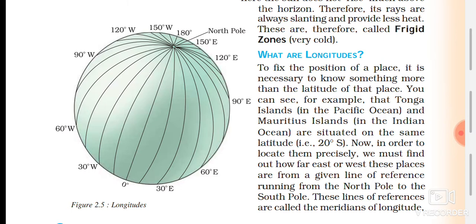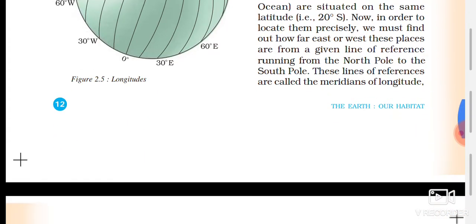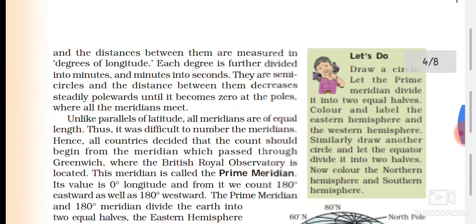Just as the equator is the centre and the southern side goes to south latitudes and the northern side to north latitudes, similarly, if you go to the east side then it is eastern longitudes, and to the west side it is western longitudes.